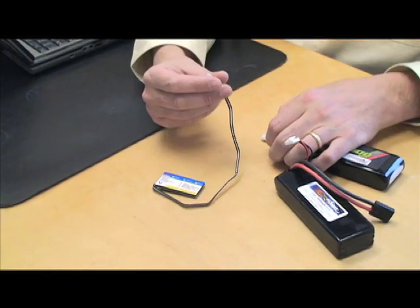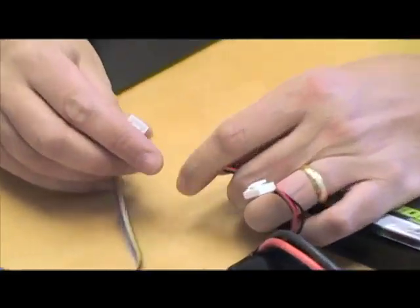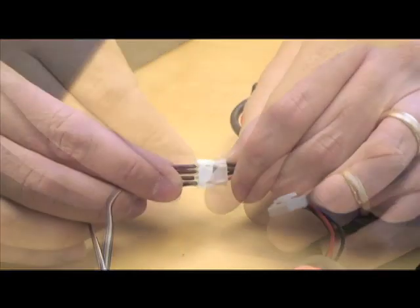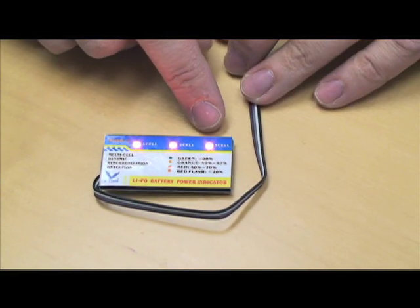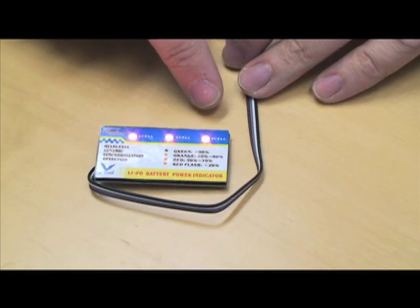It comes with a plug on the end. So while you're running your vehicle, simply plug it in. After it's plugged in, it'll indicate the number of cells and the LEDs are color-coded.